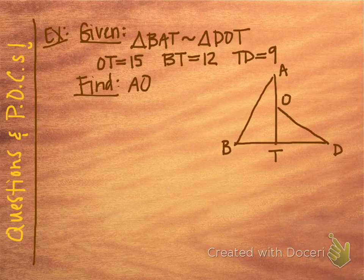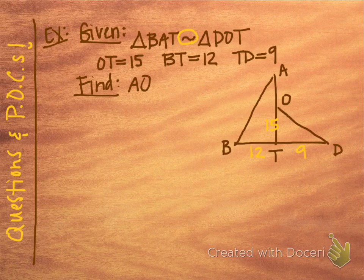Let's try an example using similar shapes. Triangle BAT is similar to triangle DOT, and it gives us some lengths. The very first thing we want to do is make sure we understand how they're similar, since these triangles are not oriented the same way. Let's label what we've got: OT is 15, BT is 12, and TD is 9. We need to find the length of AO — we'll call that X.